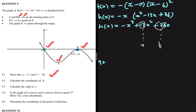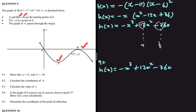For 9.2, we calculate the coordinates of A, which is a turning point — just like B. We have two turning points on a cubic function. Using h(x) equals minus x cubed plus 12x squared minus 36x, we know that at a turning point the gradient equals zero, so we differentiate h(x) and equate to zero.